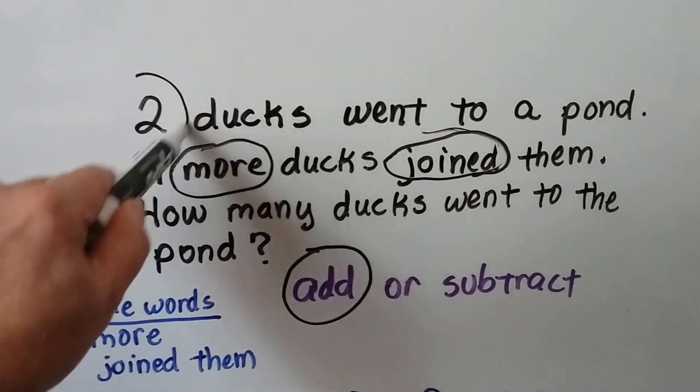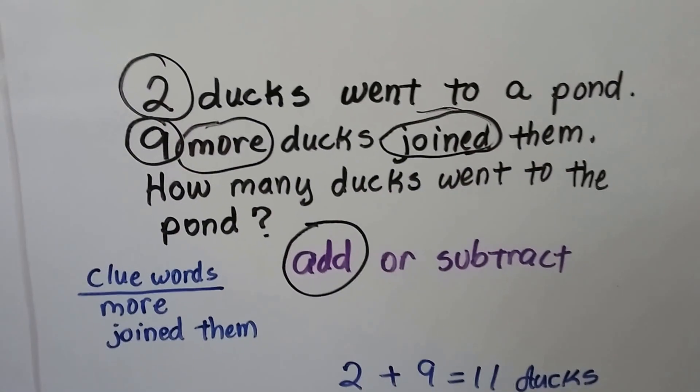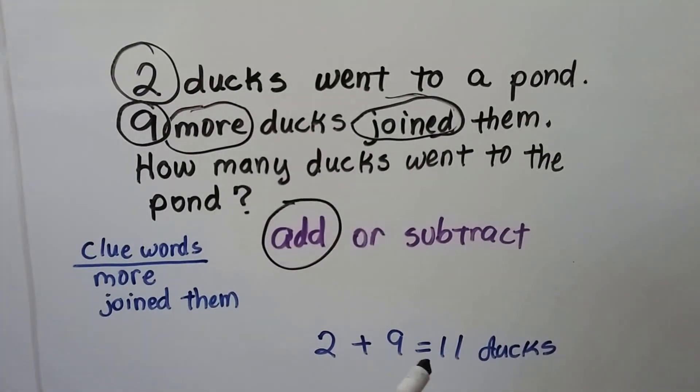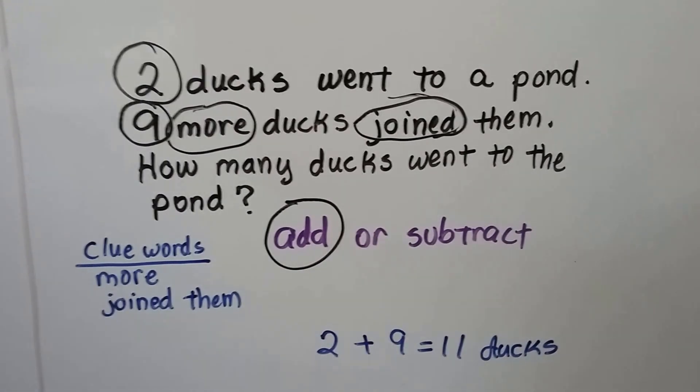you're adding to it. So we're going to do addition. We're going to circle our important numbers, two and nine. We're going to add them. Two plus nine is eleven. And we label it as ducks. It's eleven ducks.